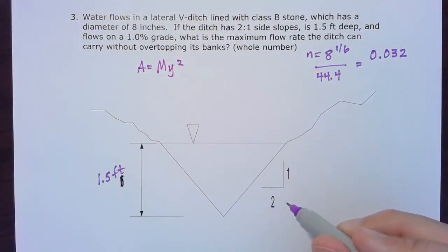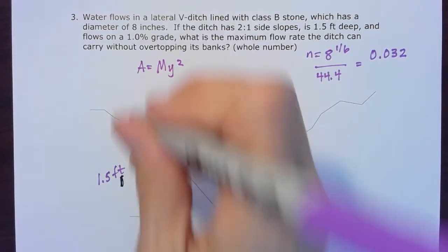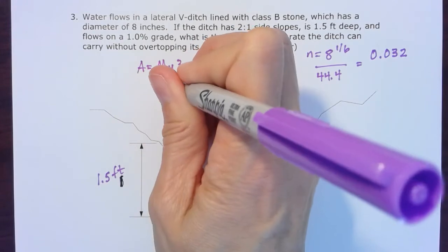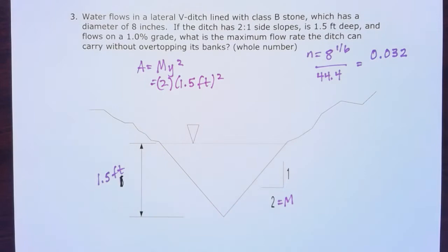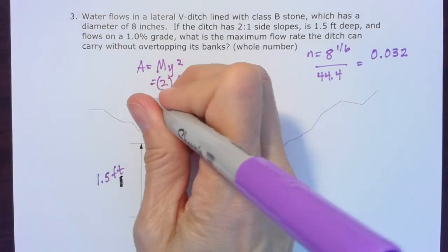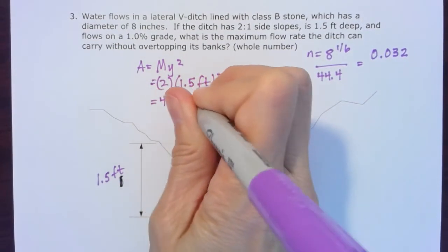In this case, our M is that horizontal distance, two to one, so it's two. And then our Y is 1.5 feet, and we'll square that. The area equals 4.5 square feet.